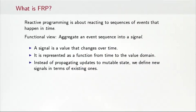The functional view is that we can actually take such a sequence of events and aggregate it into a signal. So a signal is a value that changes over time and it's represented as a function from the time domain to the value domain. That means that instead of propagating updates to mutable state one by one, we define new signals in terms of existing ones. In a single operation we can define a new signal in terms of signals that we have already defined.